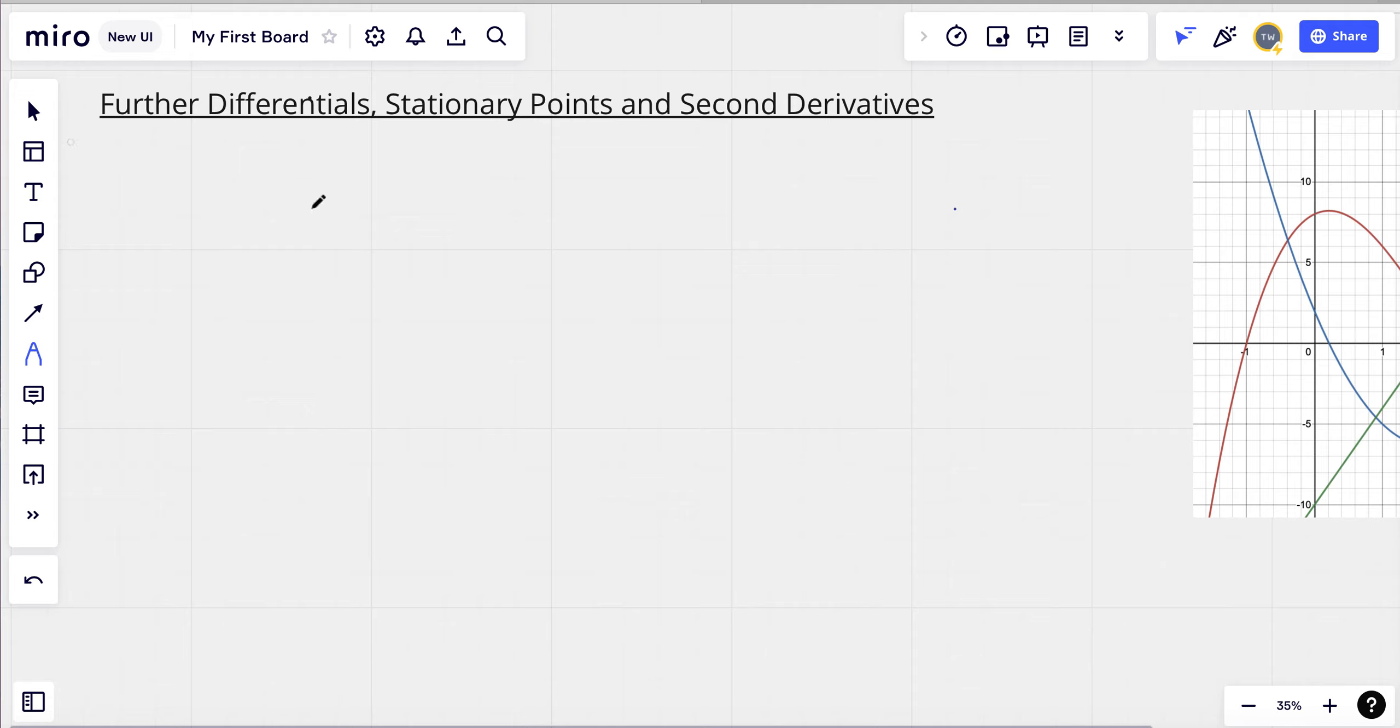Now, yesterday, we looked briefly at stationary points. So let's have a little think about stationary points again. As a brief recap, if my differential f'(x), or my dy/dx, if that is greater than or equal to 0, this gives me a point on the graph, and it shows that, because it's positive, I have an increasing function.